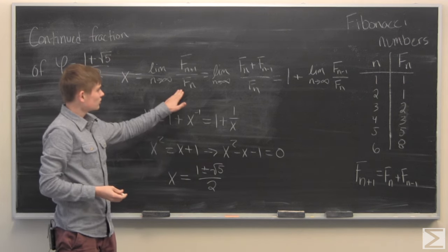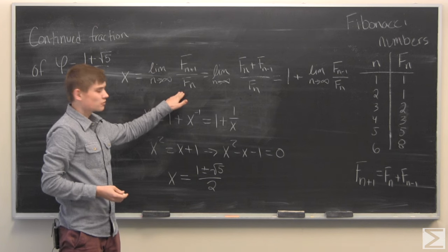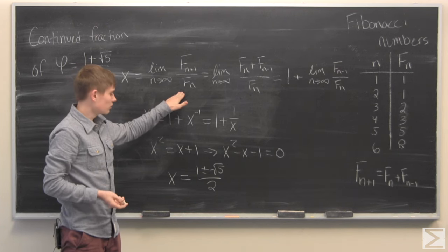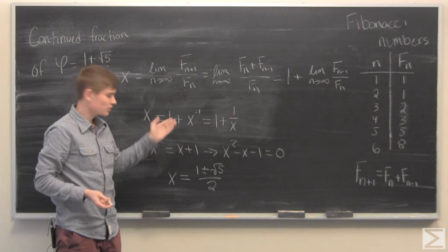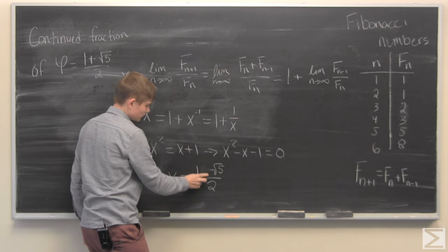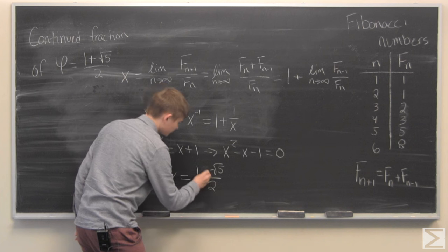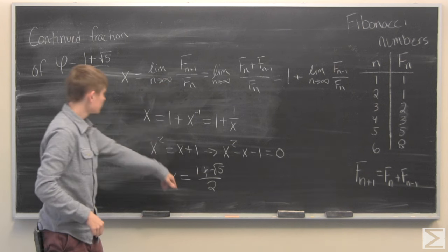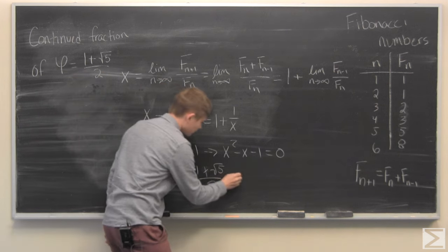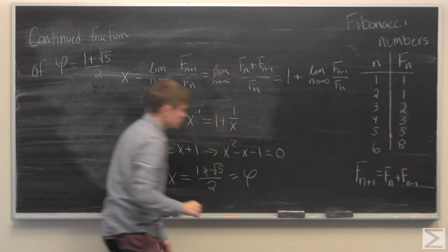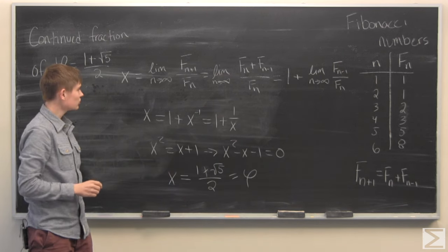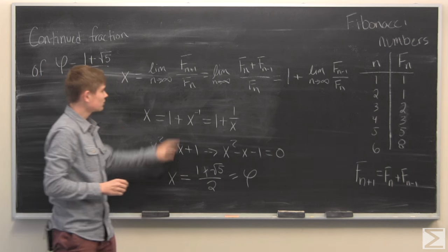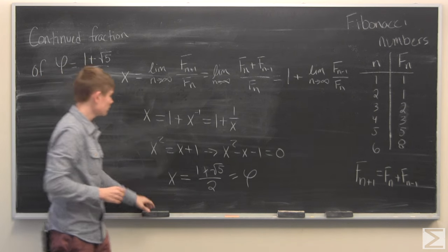However, since the Fibonacci sequence is increasing and always positive, the ratio is going to be positive. Therefore, we know that this must be plus and not minus. This is actually the golden ratio. Now that we've established the connection, we can keep going with this.